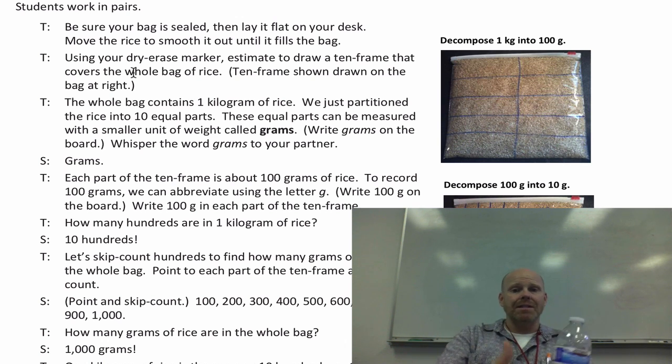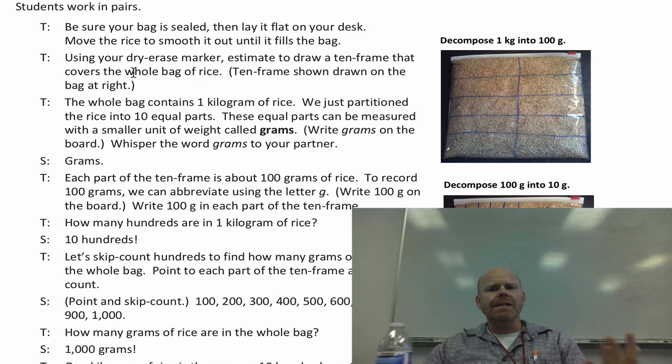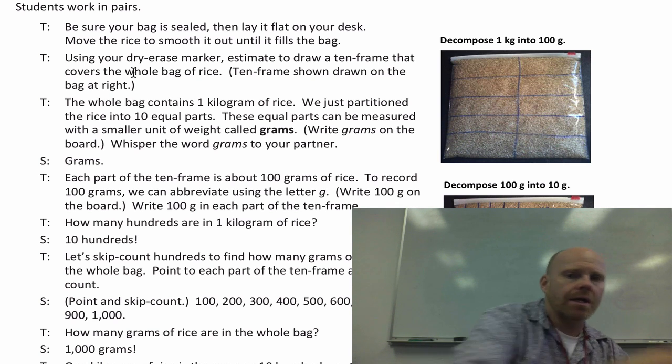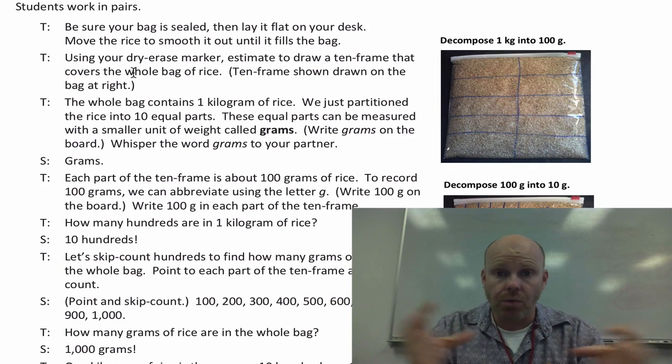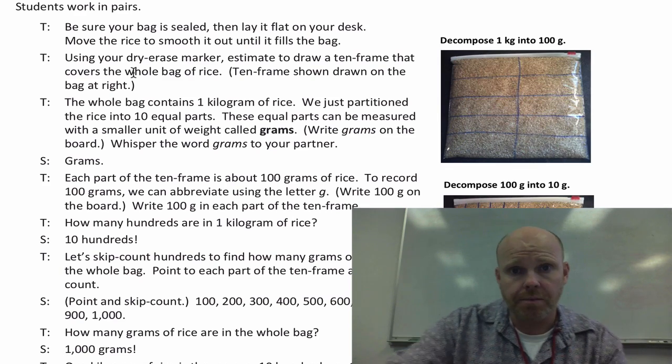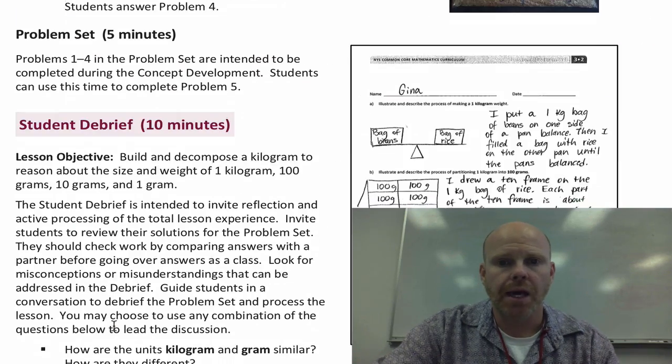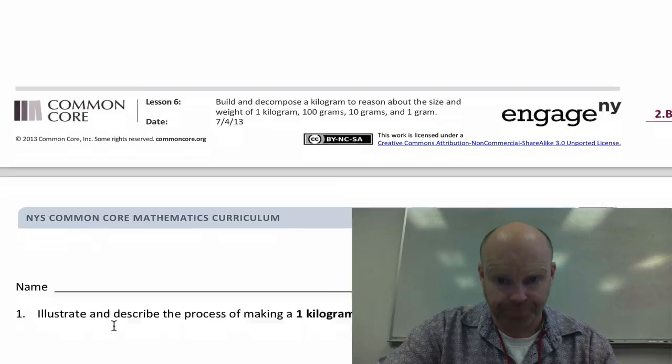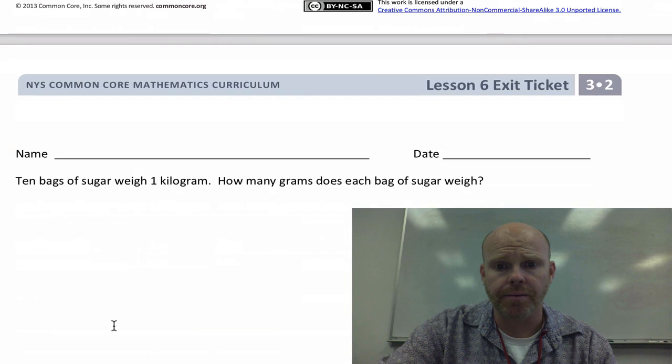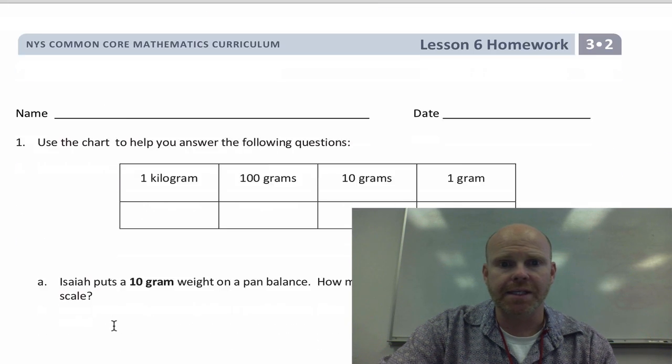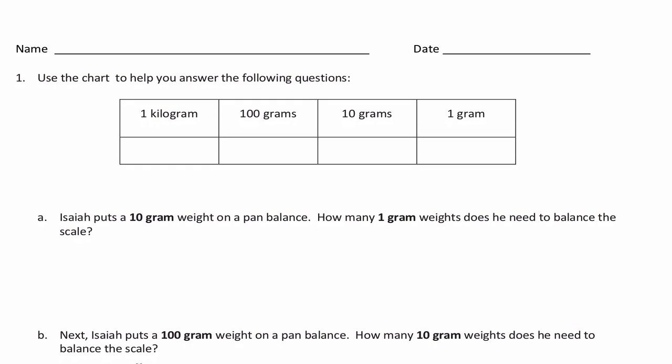Then I could break that up into ten, and break that into ten. You can take a weight and break it up into equal groups in smaller portions. The point is, when you have ten one-grams, you have ten grams. Ten ten-grams gives you a hundred grams. Ten hundred-grams gives you a kilogram.